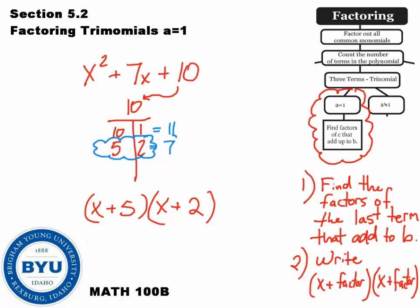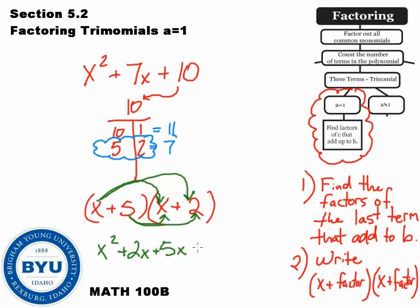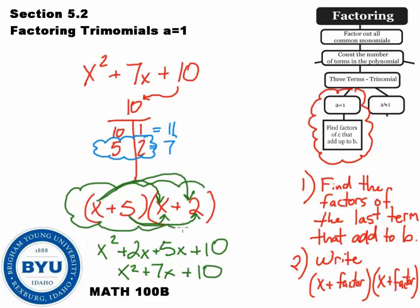You can check your answer by simply distributing it out. x times x is x squared, x times 2 is 2x, 5 times x is 5x, and 5 times 2 is 10. Use the distribution method, combine like terms, and notice it comes out to what we originally started with: x squared plus 7x plus 10. So this right here is our factored answer.